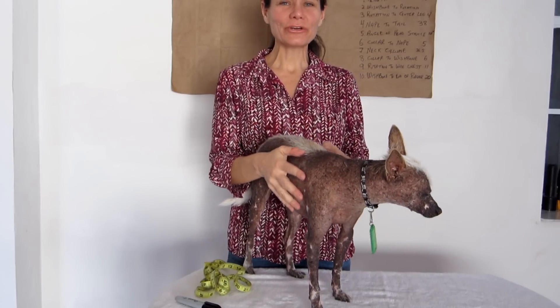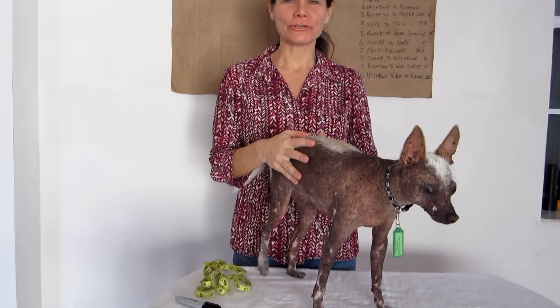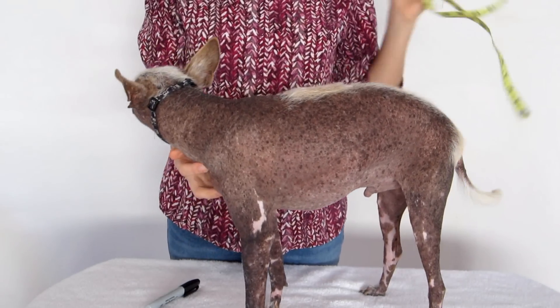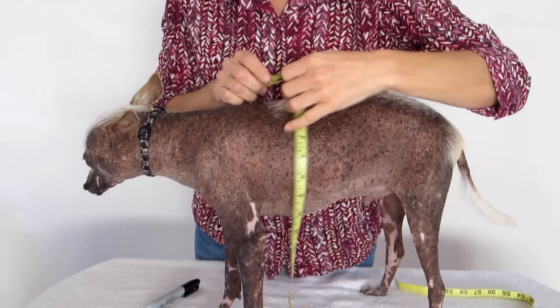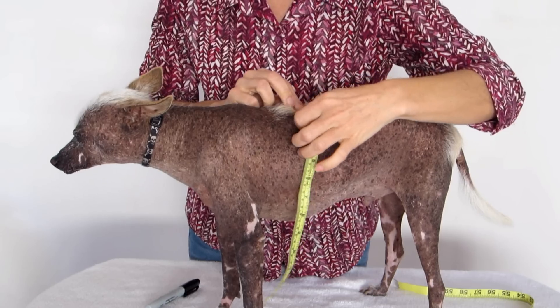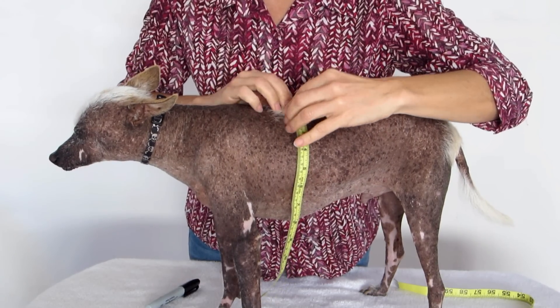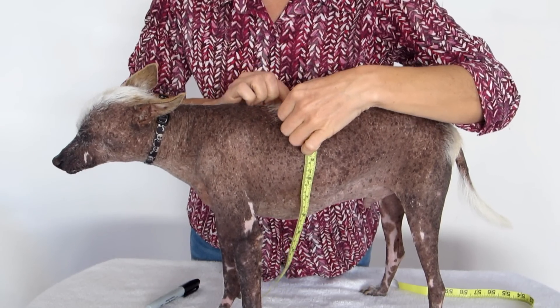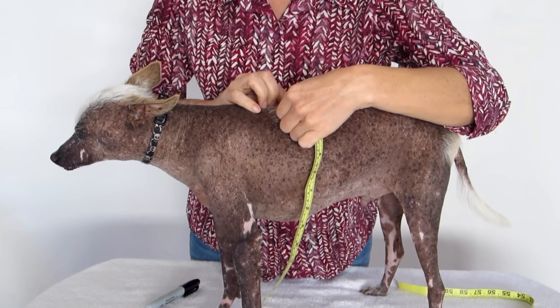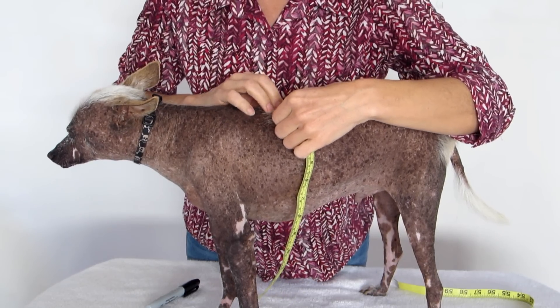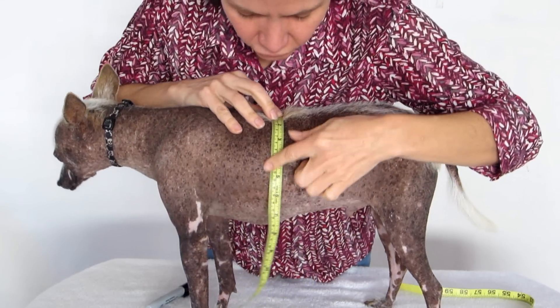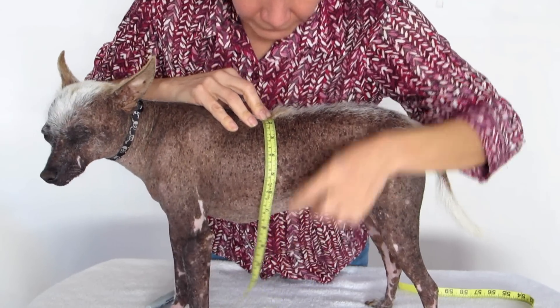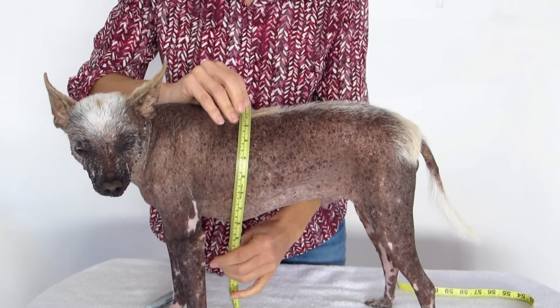Hi there! Today we're going to learn how to make a jacket for your pet. We'll need to take about 10 measurements before we begin the pattern. The first one is the length. How long do you want your jacket to be? Do it right on the fattest part of your dog.